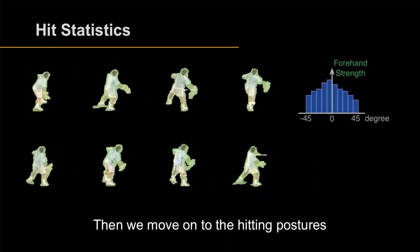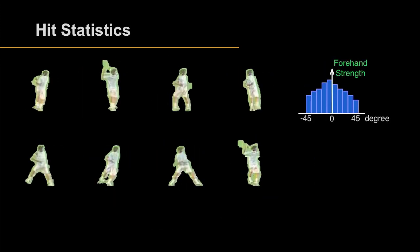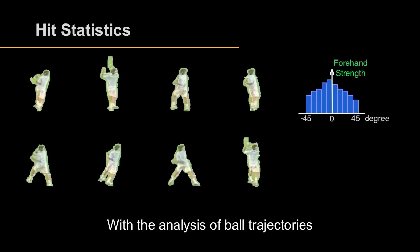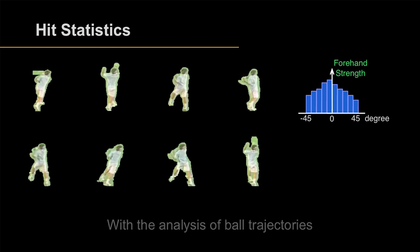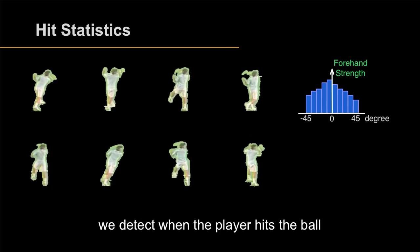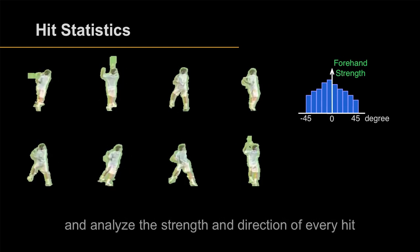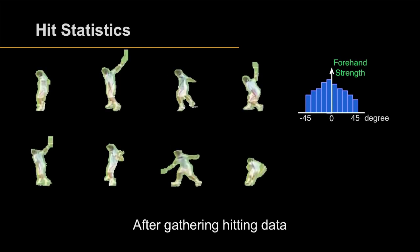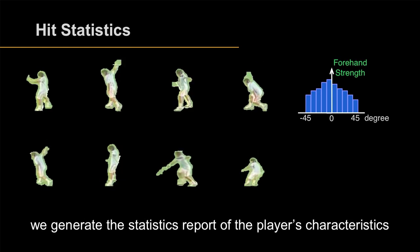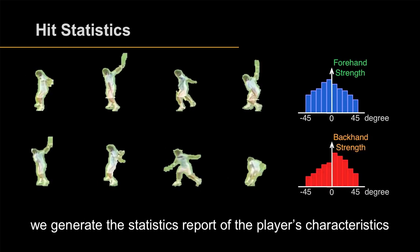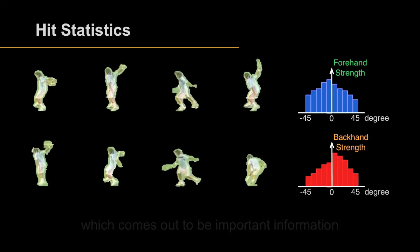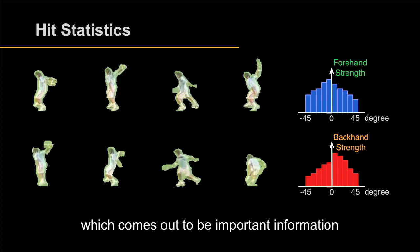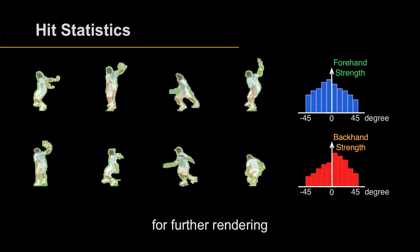Then we move on to the hitting postures. With the analysis of ball trajectories, we detect when the player hits the ball and analyze the strength and direction of every hit. After gathering hitting data, we generate a statistics report of the player's characteristics, which provides important information for further rendering.